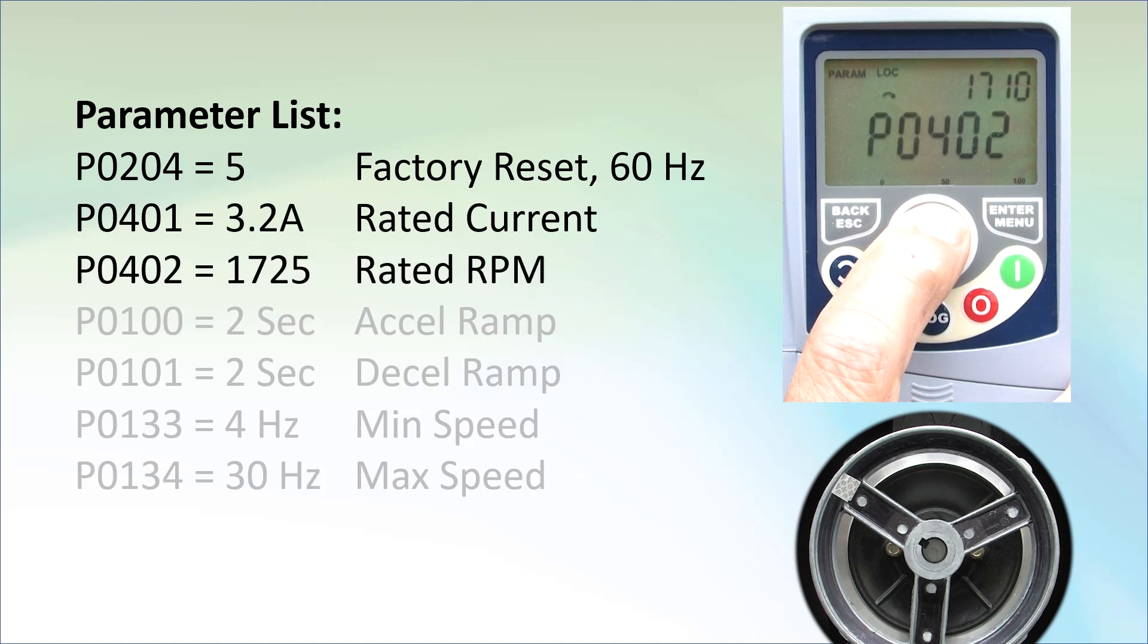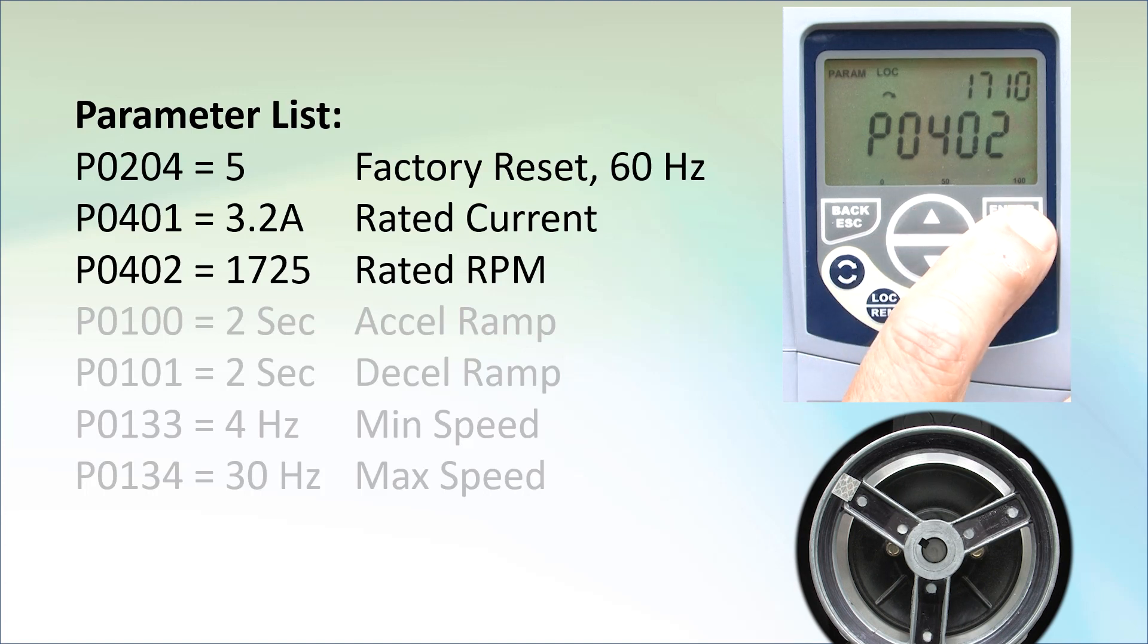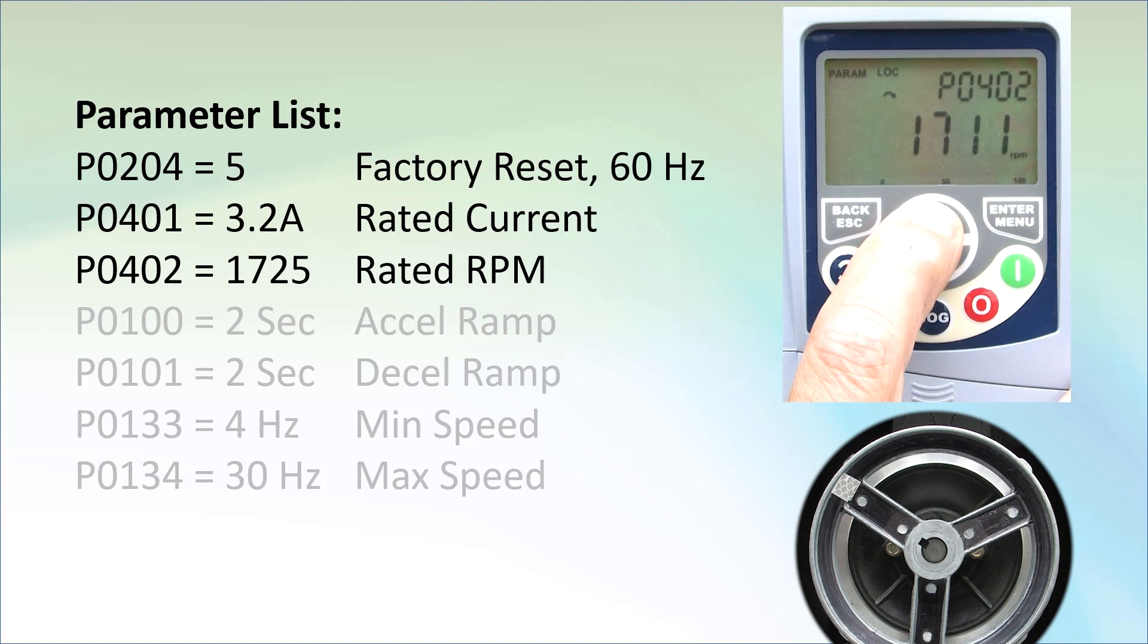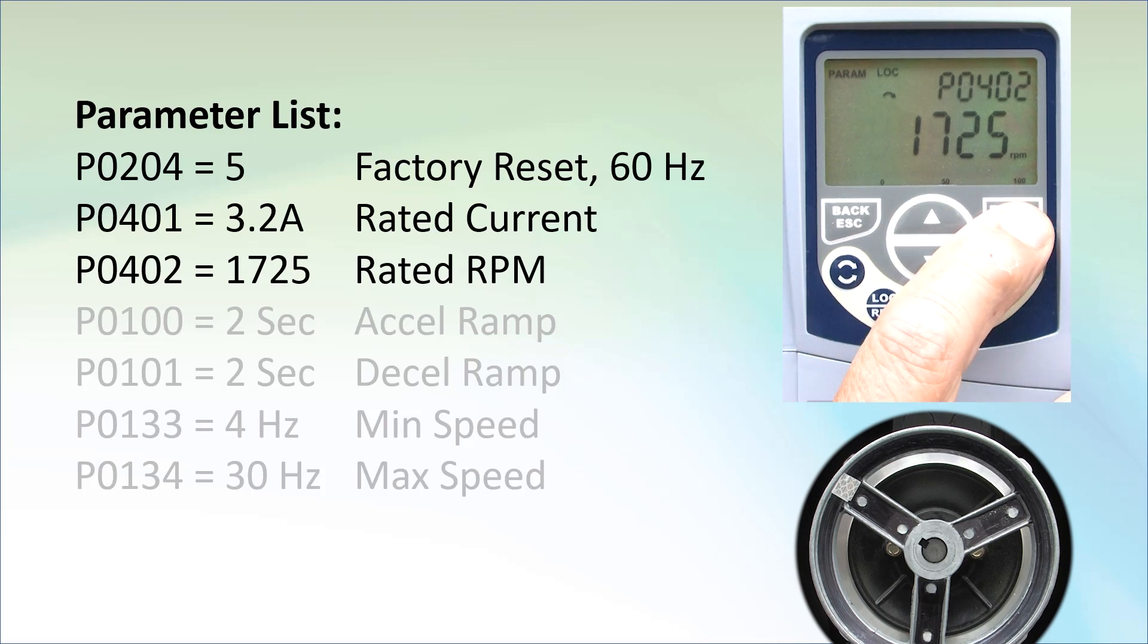Parameter 402 is the motor's rated speed. Our motor is rated at 1725 RPM so I'll enter into that, change it to 1725 and enter to accept.